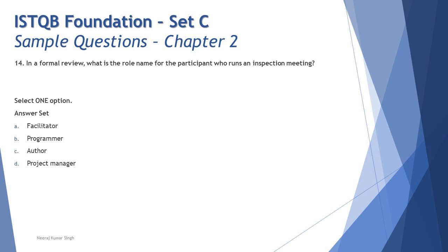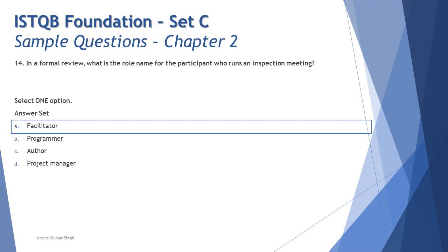Programmer and author don't hold standard roles here — programmer doesn't have a standard role, and we refer to developers, testers, or architects as reviewers. Author is someone who has written the document, and project manager could manage the review process but is not the person who facilitates or runs the meeting. So the right answer is facilitator or moderator — it is not the review leader.